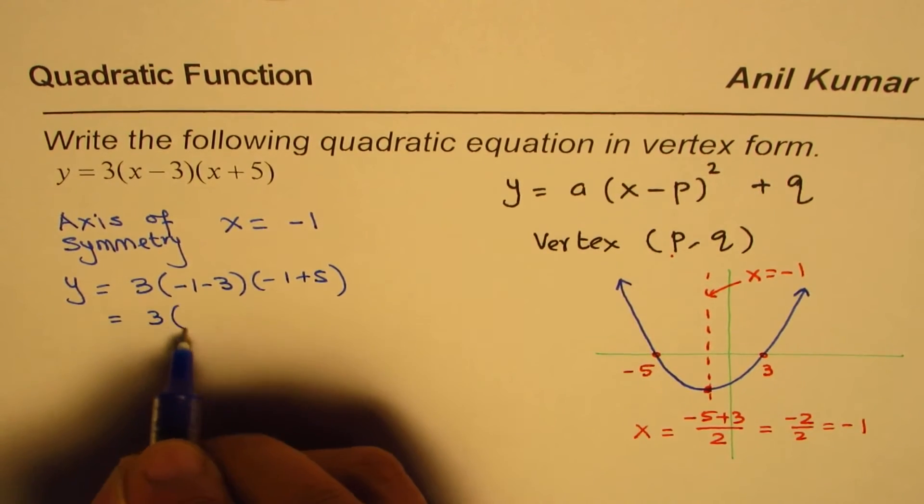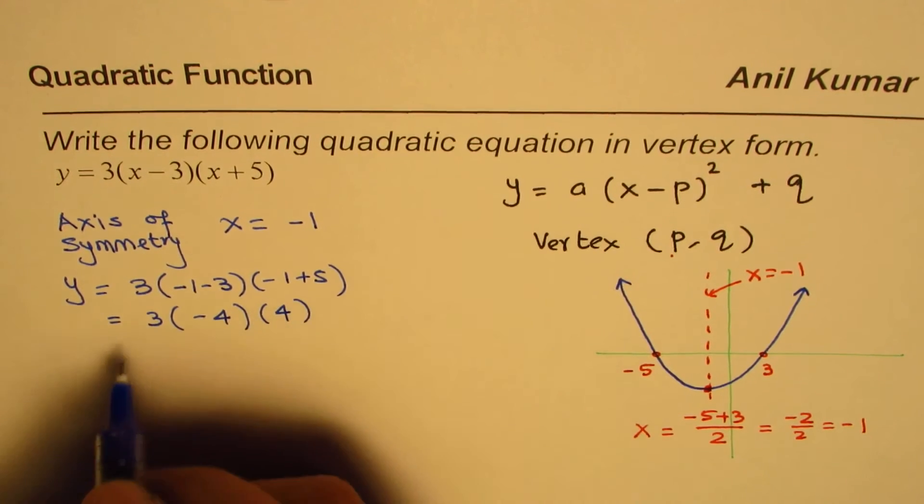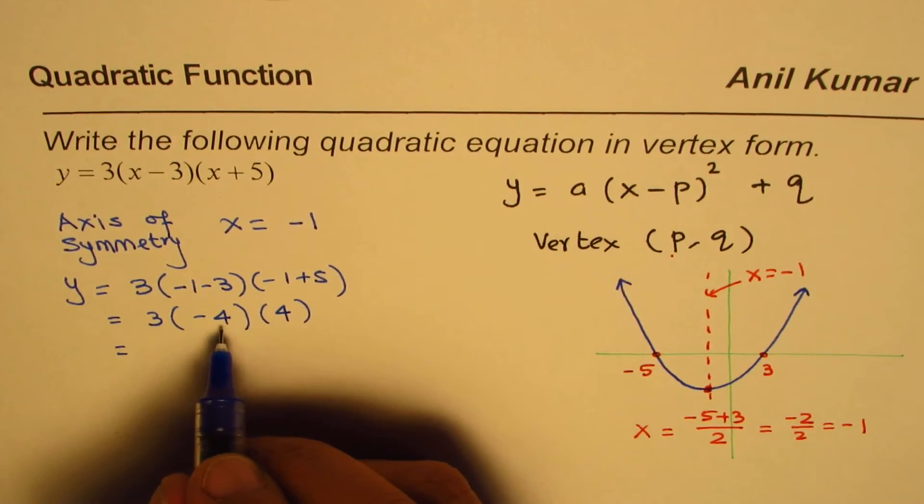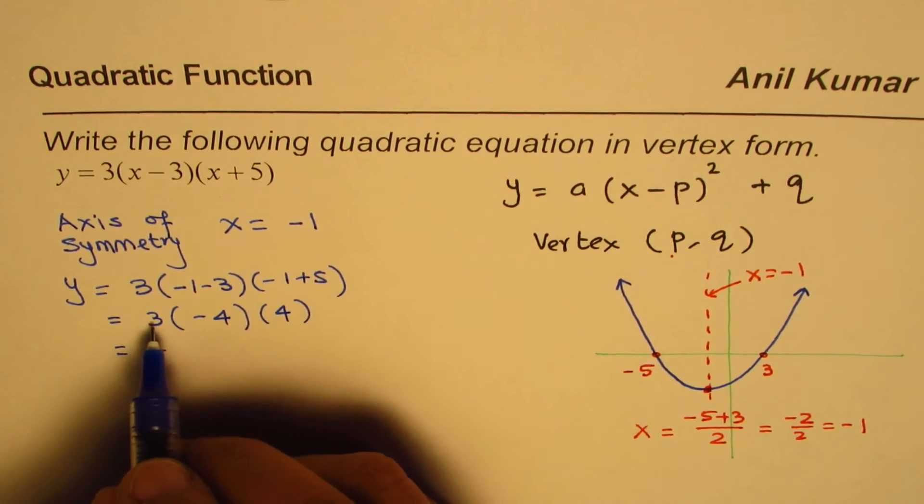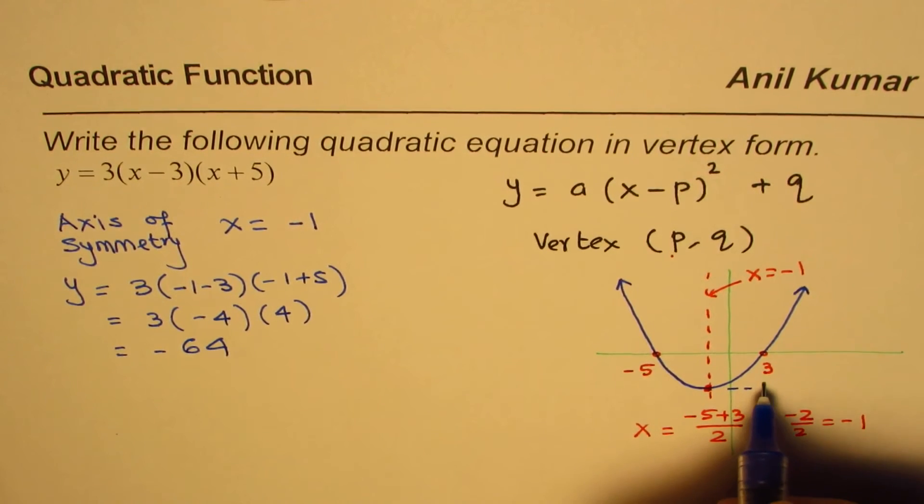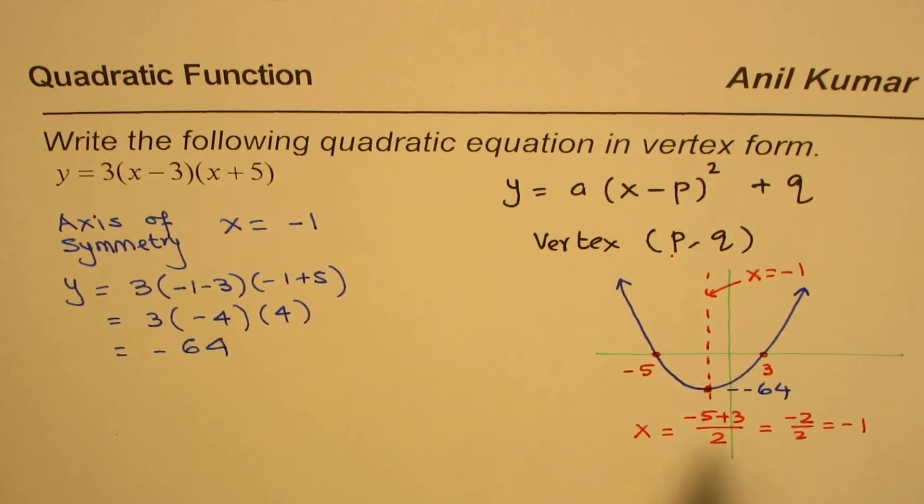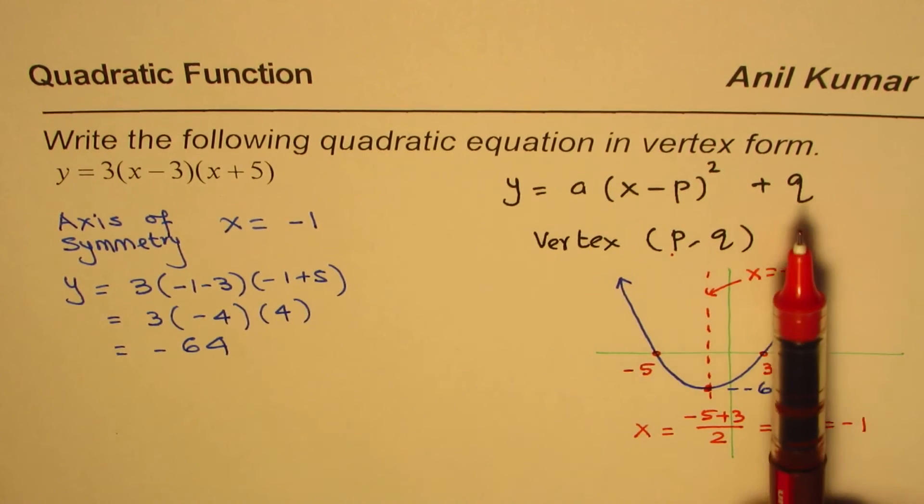And that gives you 3 times minus 4 times 4, and this is 16 negative value times 3 which is 64. So we get this value as minus 64. So we got the value of q.